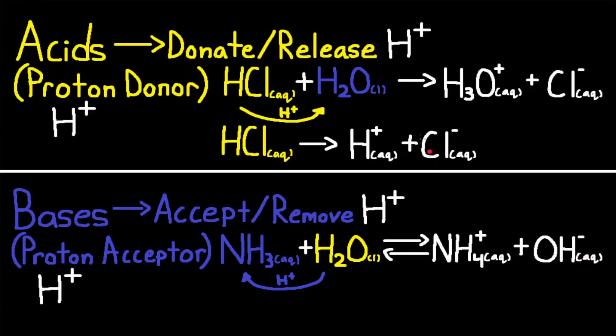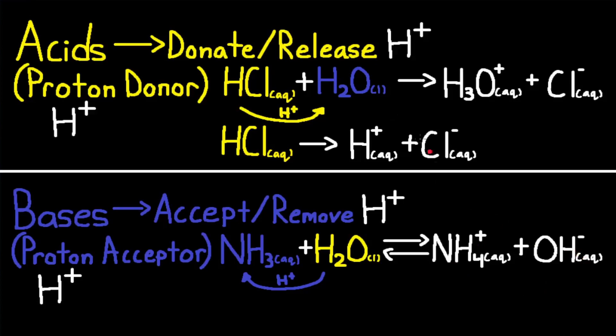Now let's find the conjugate acid and base. HCl donates its H⁺ ions to H2O, producing H3O⁺, so H3O⁺ is the conjugate acid, and Cl⁻ must be the conjugate base by process of elimination. Whatever the acid produces is the conjugate acid. For the NH3 reaction, NH3 is the base because it accepts an H⁺ ion from H2O. However, H2O donates an H⁺ ion to NH3, so H2O is the acid. When H2O donates its H⁺ to NH3, it produces NH4⁺ — the conjugate acid — and OH⁻ is the conjugate base. H2O is an example of an amphoteric substance, since it can act as an acid or base depending on the reaction.